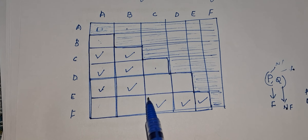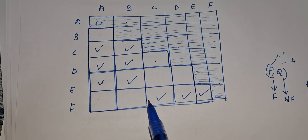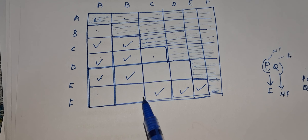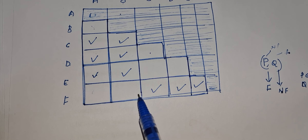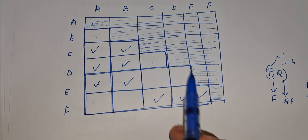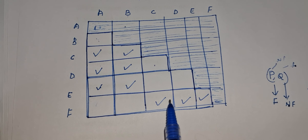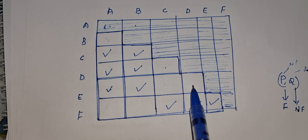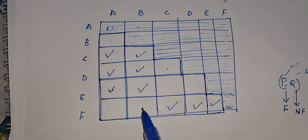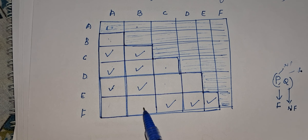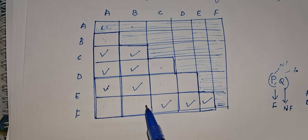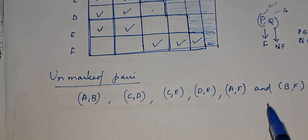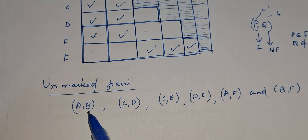So the first step is to draw the table for all pairs of states. Then mark all pairs where one state is final and the other is non-final — either P or Q should be final and the other non-final. After marking the cells, the third step is: if there are any unmarked pairs P, Q — the unmarked pairs here are A,B; C,D; C,E; D,E; A,F and B,F — such that the transition of P on input X and transition of Q on input X is already marked, then we can mark the pair P, Q in the table. Let us check whether we can mark these unmarked pairs.